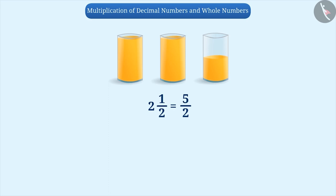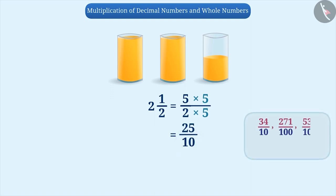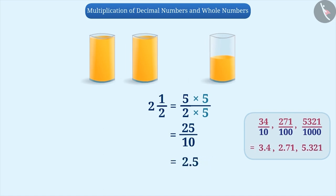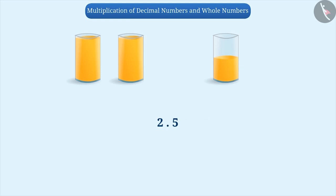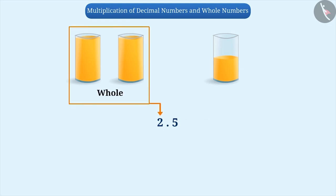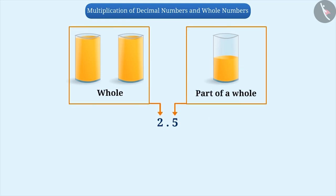If we multiply both the numerator 5 and denominator 2 by 5, we will get a fraction whose denominator will be 10. If the denominator of a fraction is a number like 10, 100, or 1000, then we can represent it in its decimal form, in which the whole number is represented on the left of the decimal point and the part of the whole is represented on the right. A number represented with a decimal point is called a decimal number.